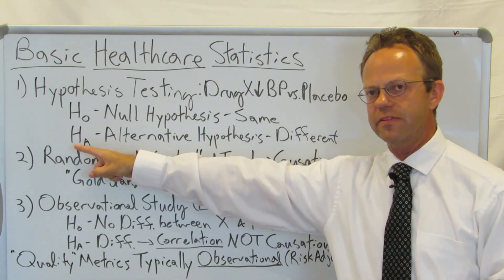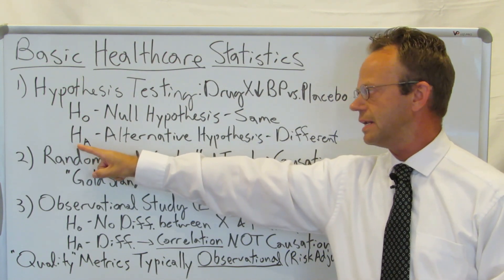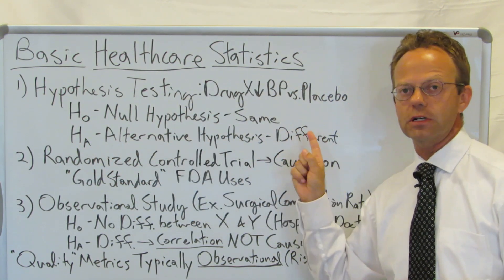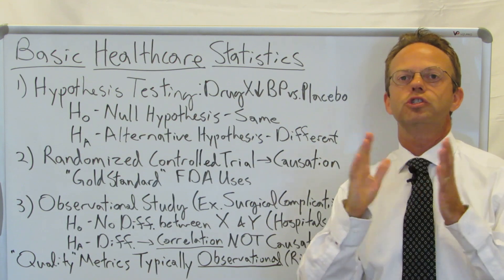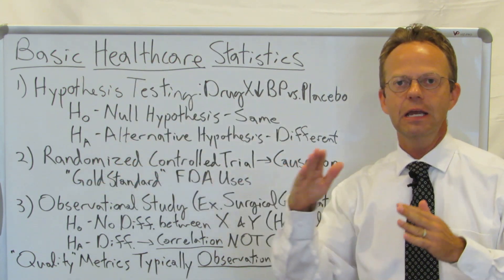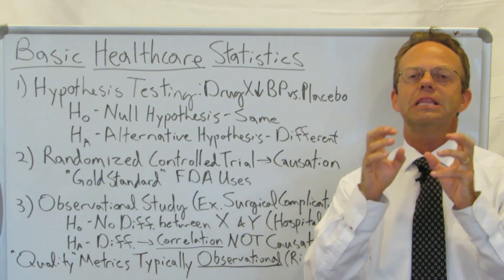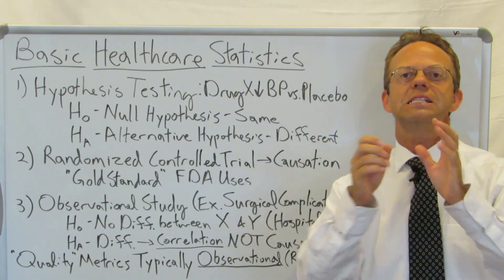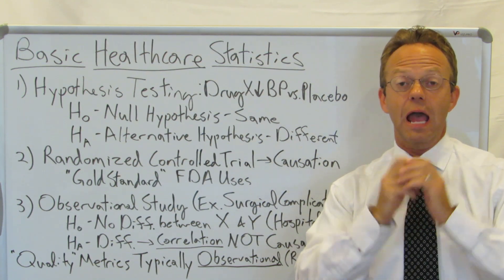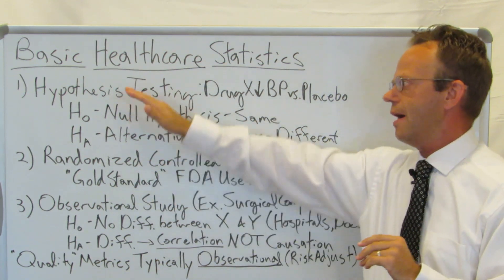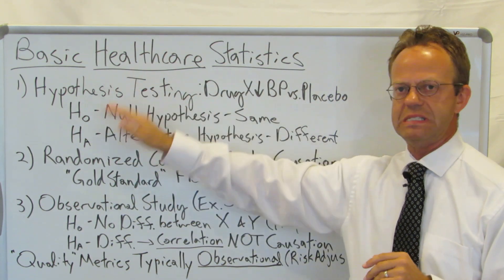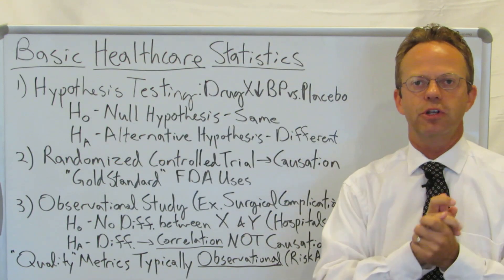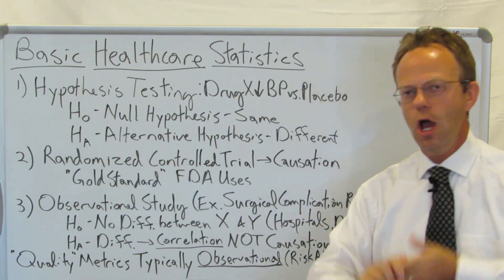And then there's the alternative hypothesis, abbreviated H sub A, which is that they're different. So what you're doing with hypothesis testing is you're looking at the data and you're asking: is there a difference? That's important because you have to form a specific question or hypothesis that you're testing when you're looking at the data.